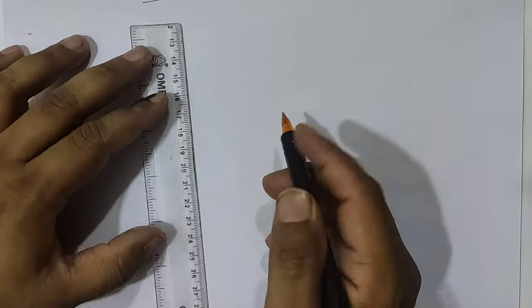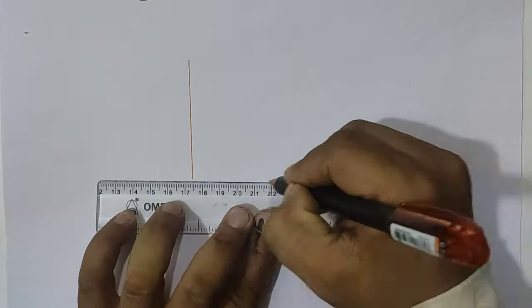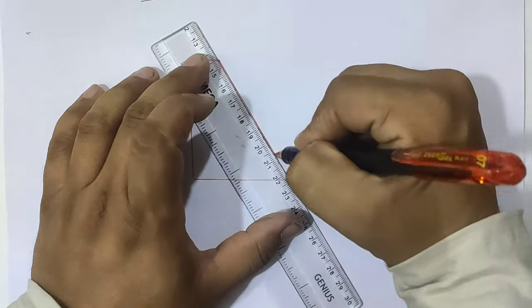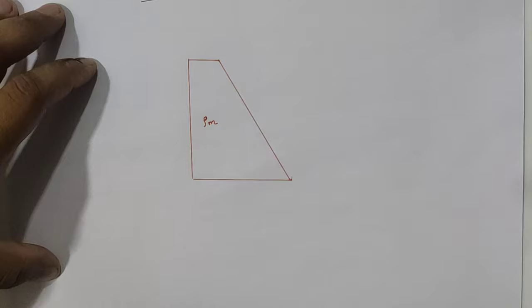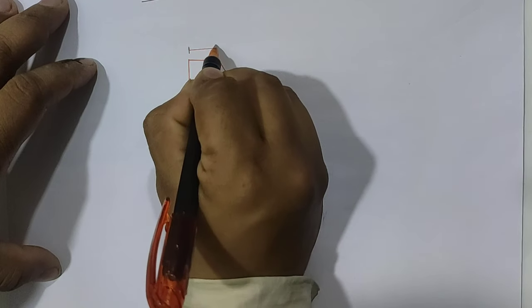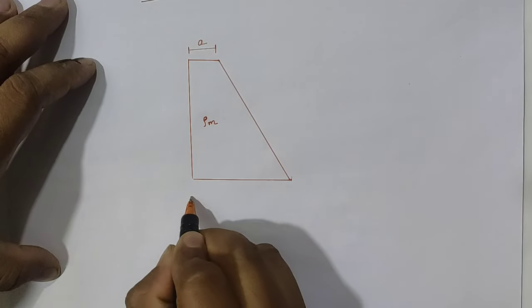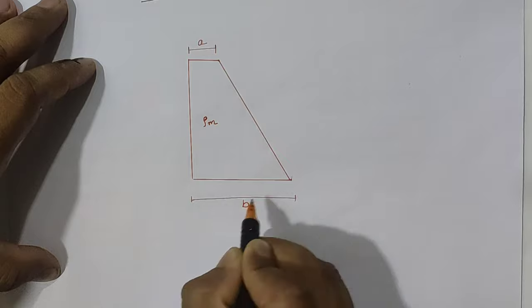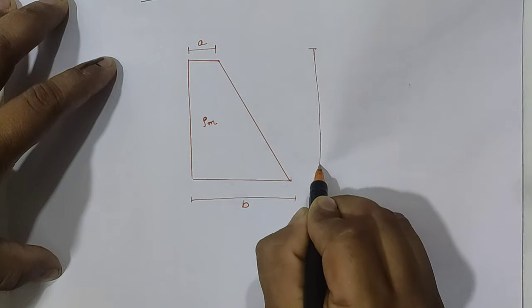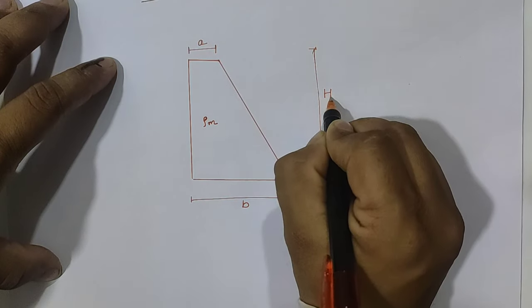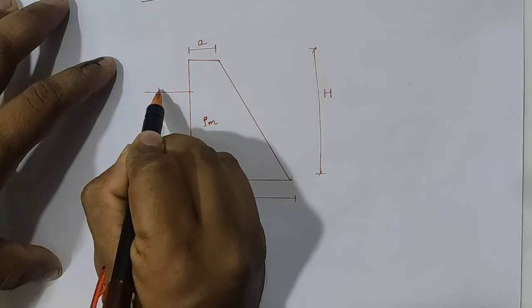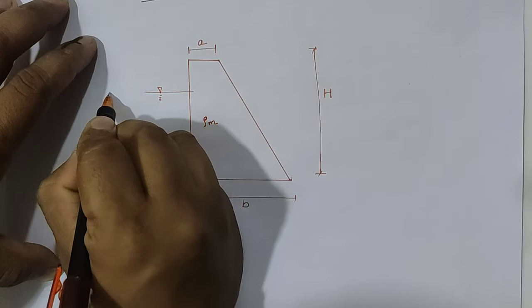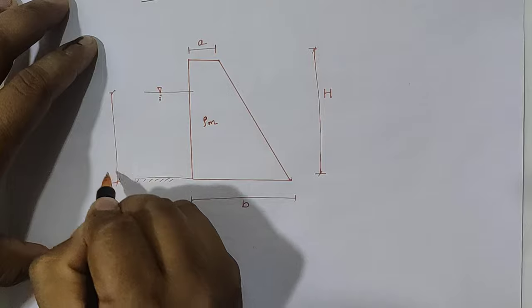Let us assume the dam section where the material of the dam has density del_m, top width as small 'a', bottom width as small 'b', overall height of the section as capital H, and the water stored on the dam at the vertical face has total height as small 'h'.